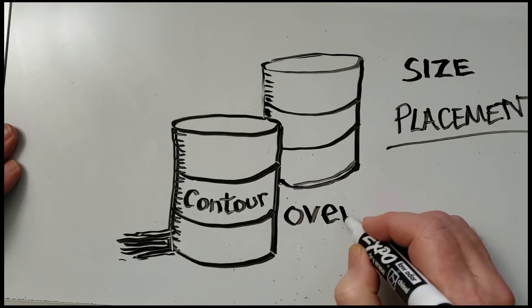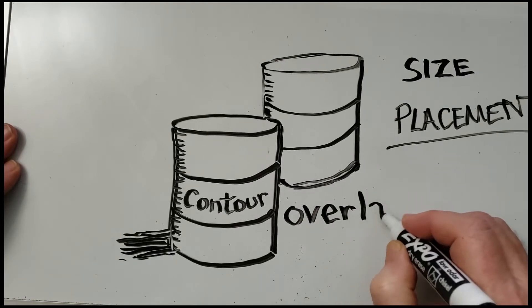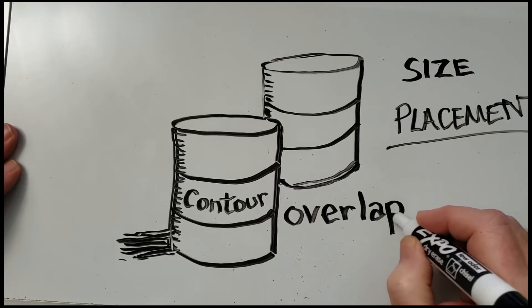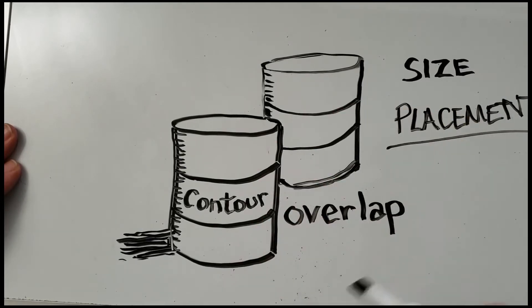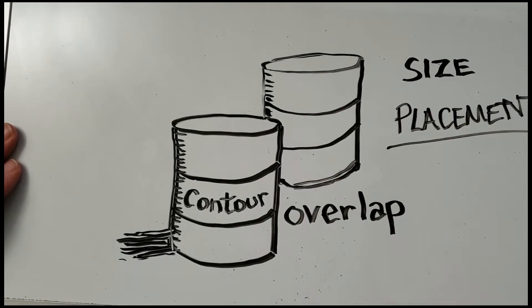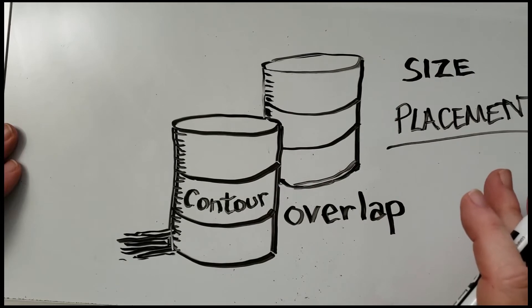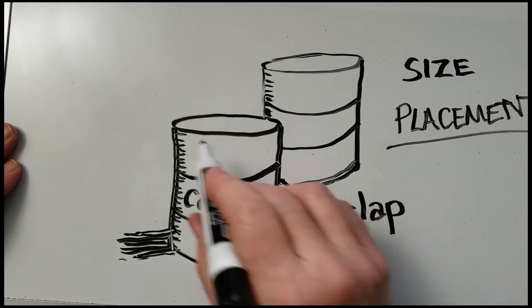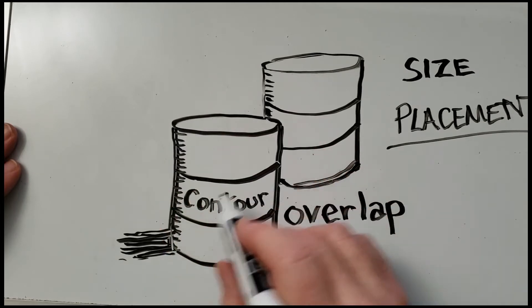And I also overlapped one can over the other. When you overlap two items, the one that appears to be on top seems to be closer.